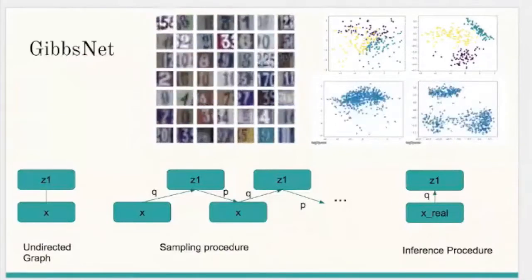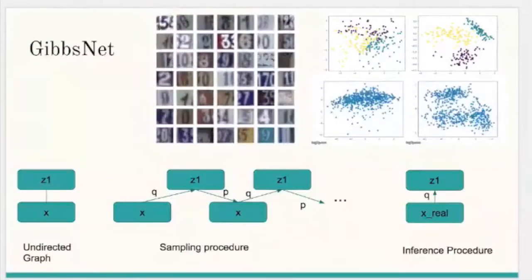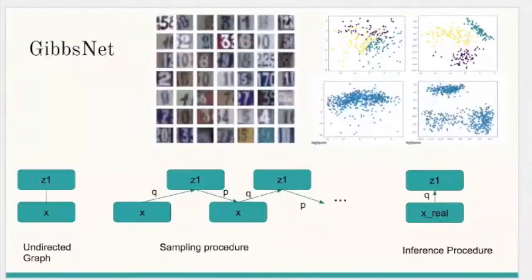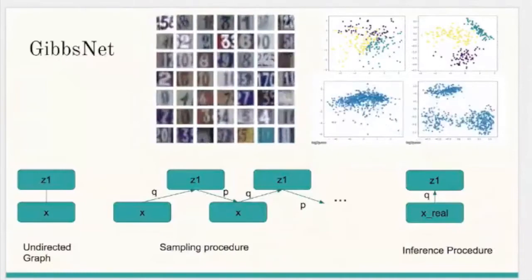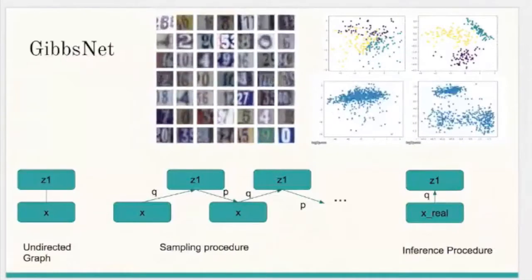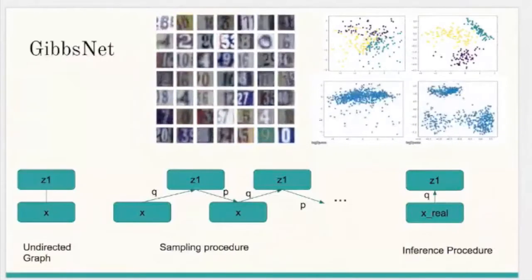Achieving the speed and simplicity of a directed latent variable model, it is guaranteed, assuming that the adversarial game reaches the virtual training criteria global minimum, to produce samples from P(X,Z) with only a few sampling iterations.